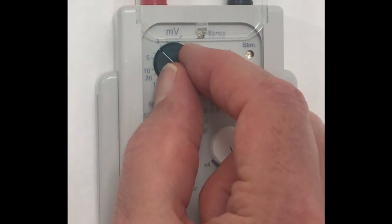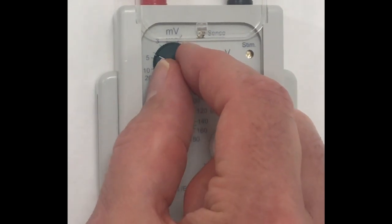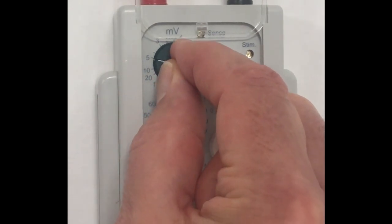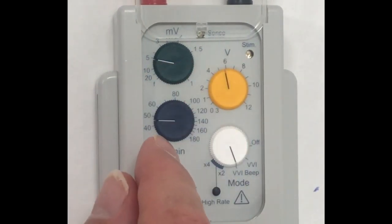I gradually increase it until I am not sensing anymore and I start to see pacing spikes denoted by this light turning yellow.